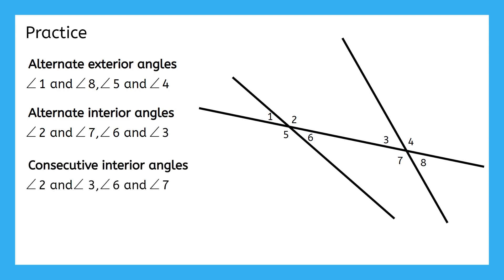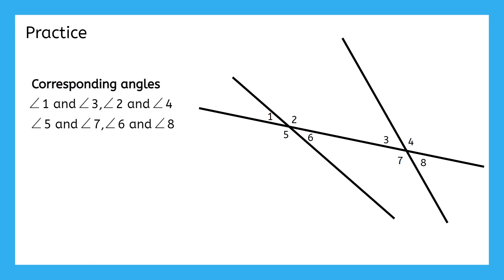The consecutive interior angles are still going to be within angles 2, 3, 6, and 7, but now the pairs are on the same side of the transversal. The corresponding angles are in the same corner of the intersections. So, we have angles 1 and 3, 2 and 4, 5 and 7, and 6 and 8.